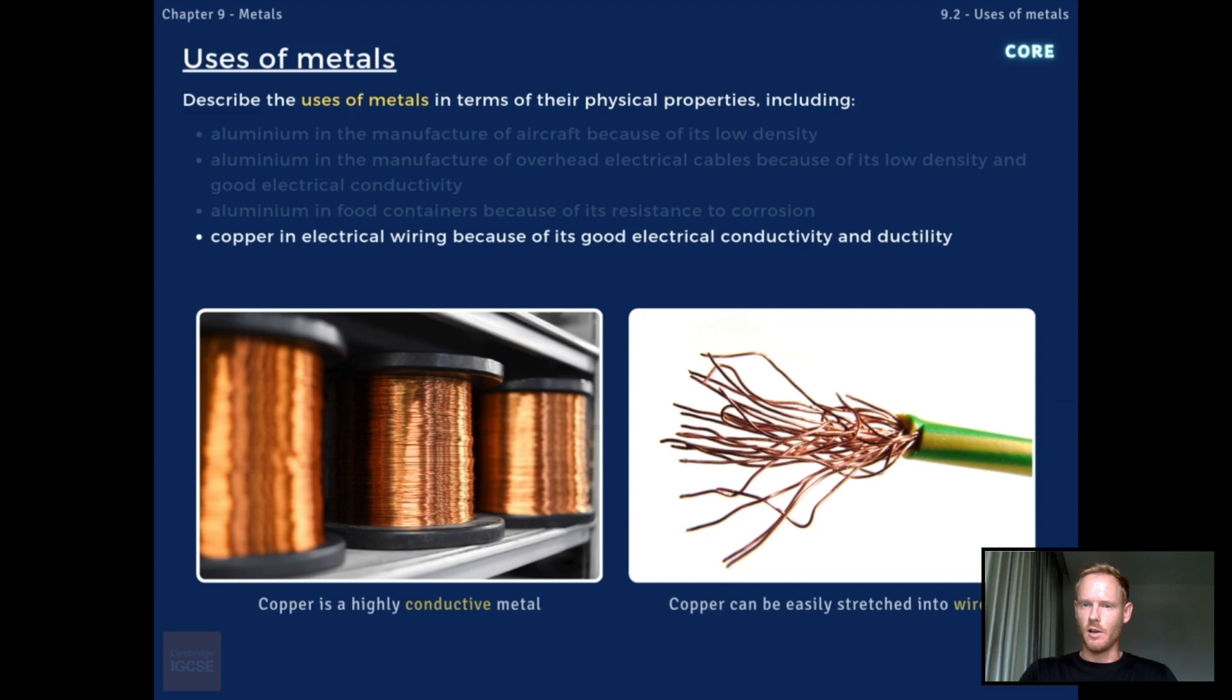Copper is also ductile, which means it can be stretched or drawn out into a thin wire without losing strength or breaking. This is due to the ability of copper ions to slide over one another when force is applied, without breaking the strong metallic bonds holding them together.